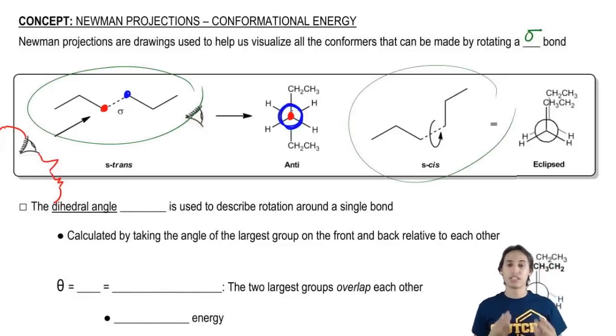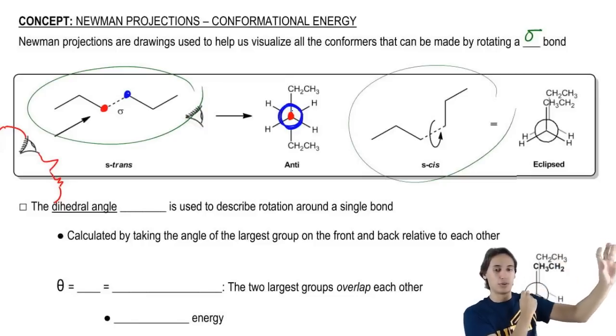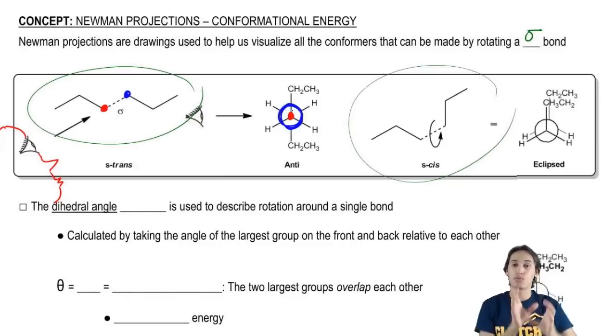And basically what Newman projections allow you to do is to visualize where are the groups on the front carbon oriented, and where are the groups in the back carbon oriented, and how are they related to each other. With Newman projections, you're allowed to rotate around that bond in a three-dimensional way.